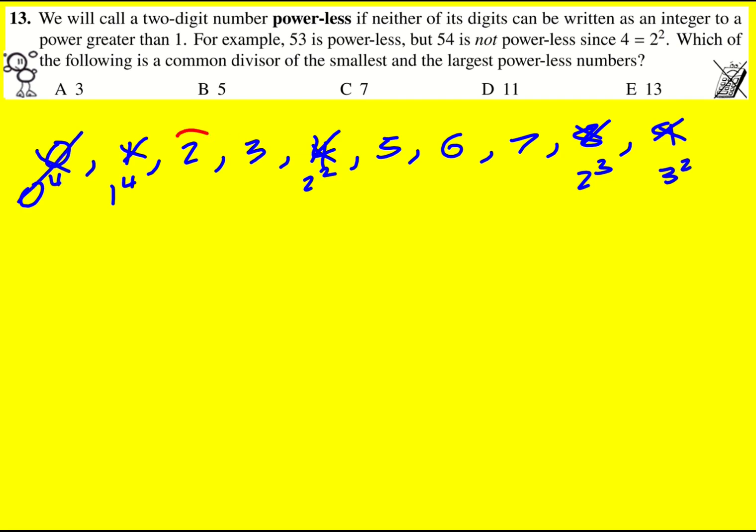So powerless numbers, these two-digit ones in particular, can only be made using the digits that I highlighted. So the smallest is going to be 22.